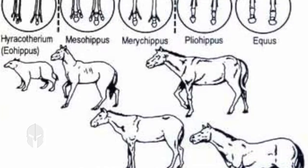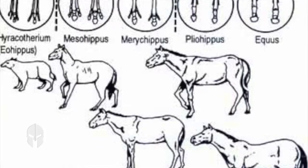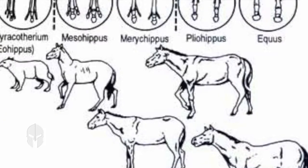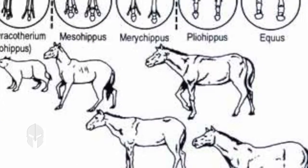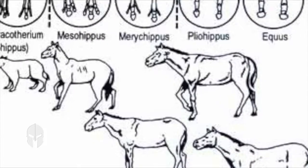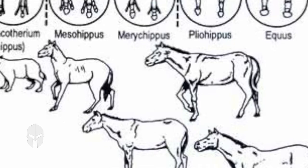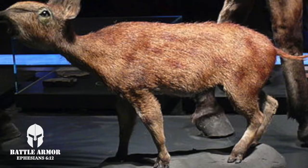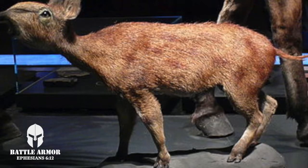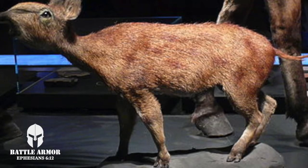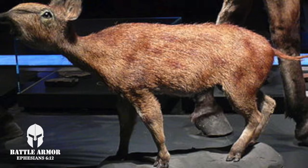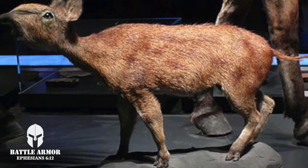5. South American fossils go from one-toed to three-toed. 6. Horses are never found in the order presented. An example is Eohippus, an extinct genus of small equid ungulates.